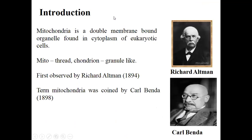Mitochondria is a double membrane bound organelle found in the cytoplasm of eukaryotic cells. It has its own genetic material, and it is considered that it may have originally come from outside the cell — possibly from a bacterium or some other type of organism. This is a basic concept and theory considered about mitochondria.